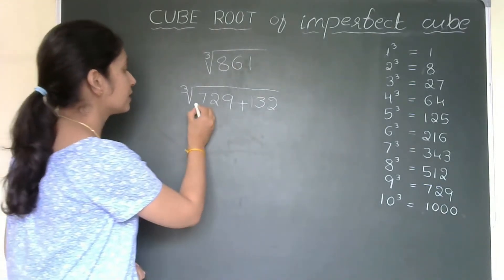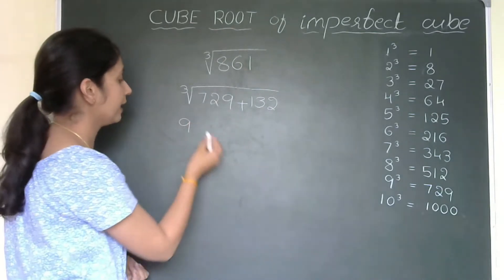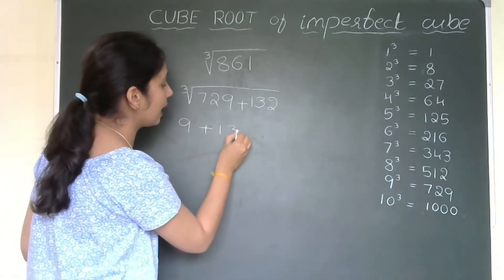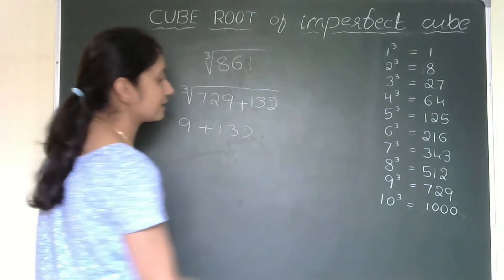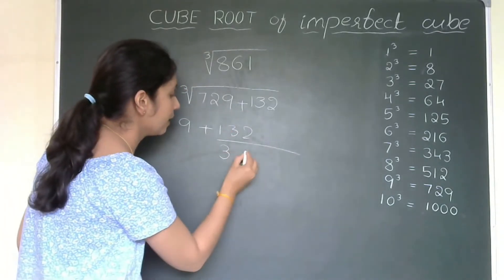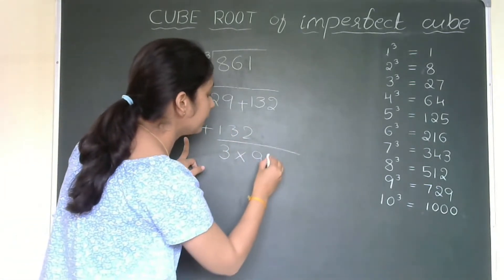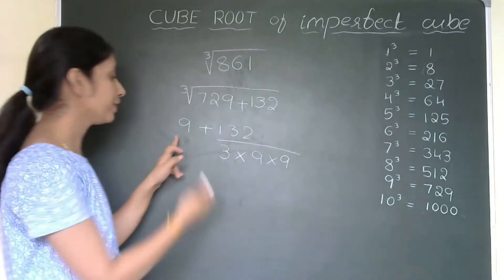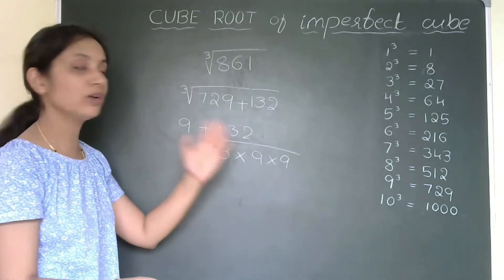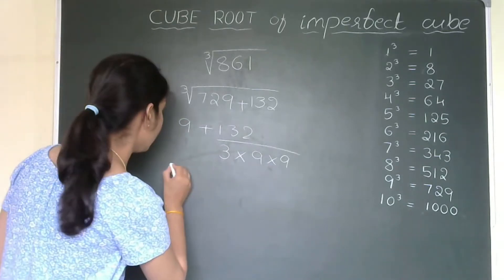Now, the next step is 729 cube root is 9. We know this. We will write this 9 plus 132 as it is. This group as it is. Now, divided by this 3 multiplied by 9 square or you will write 9 into 9 or you can directly write the value of 9 square that is 81. You can directly write 81 also.